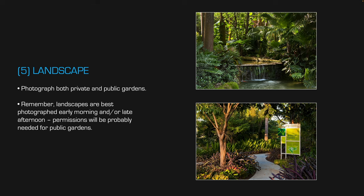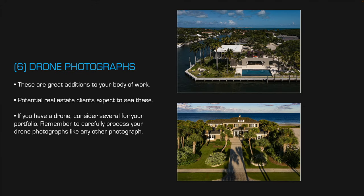Number five is landscape — public gardens and private gardens. Remember these are best photographed really early morning or late afternoon, and for public gardens, to get in at those times you may need permission. Number six is drone photography. It's really important now, and if you're thinking about specializing in real estate photography, real estate clients expect that you have a drone, know how to use it, and can produce really great drone photos.